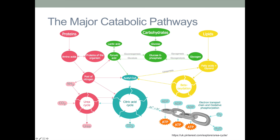The TCA cycle connects to the electron transport chain, which produces energy, and also connects to a bunch of biosynthetic pathways. Carbohydrates can be broken down into glucose, which we convert via glycolysis into pyruvic acid, and this can enter the TCA cycle through acetyl-CoA. This metabolite, acetyl-coenzyme A, is present in a lot of the pathways. Lipids get broken down into fatty acids, which can undergo the beta-oxidation pathway, producing units of acetyl-CoA as fatty acids are chopped off two carbon units at a time.